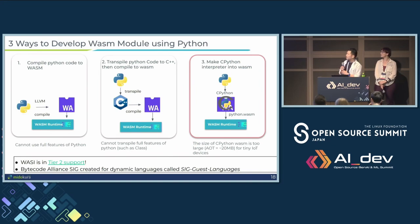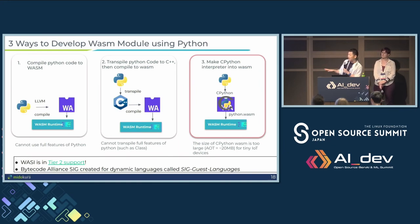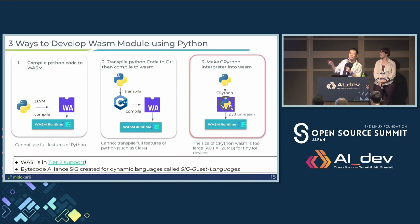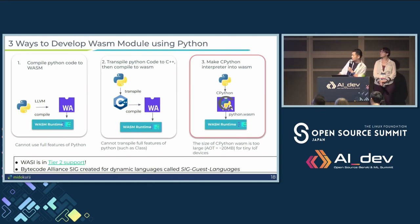That said, WebAssembly has a strong supporting Python community. WASI is now a tier-two target in CPython, meaning every breaking change has to be fixed or reverted within 24 hours. And there's also a Bytecode Alliance special interest group dedicated to supporting dynamic languages like Python — it's called SIG Guest Languages.